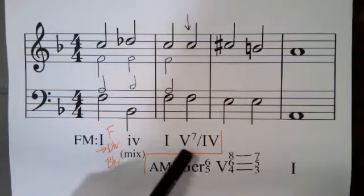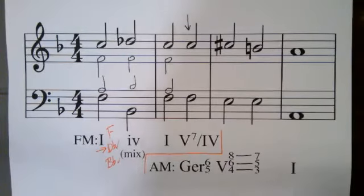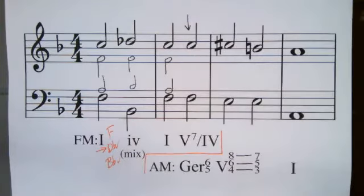Next, we're going to go to a dominant seventh of four. Pause the video if you have to, and write down the notes of a dominant seventh of four. In the key of F major, scale degree four is B-flat. If you go up a fifth from that B-flat, you get F, which is scale degree one.